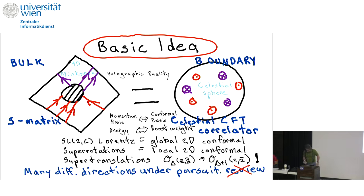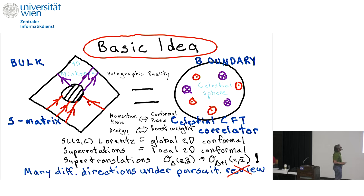The very basic idea is that you start with the usual S-matrix, usually written in a momentum space basis, and the hypothesis is that this can be described in terms of a celestial conformal field theory that lives on the celestial sphere up at null infinity, where the entry or exit points of the incoming and outgoing particles become points on the celestial sphere.